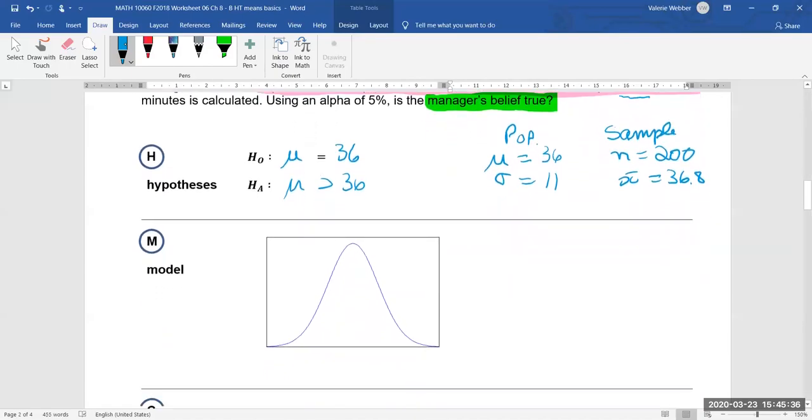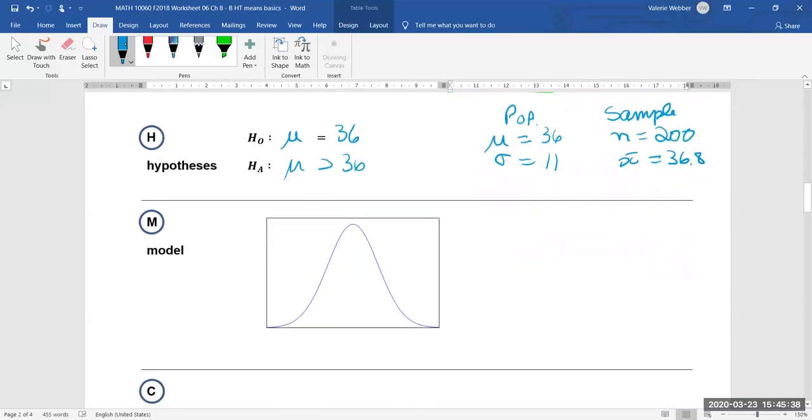Now we need to go on to the actual model so we're going to have to put our sampling distribution of means. So we're going to have our x bars is what we're plotting. Our central value is 36 and what we're going to have to do is set up, well where is our, what kind of test are we doing?